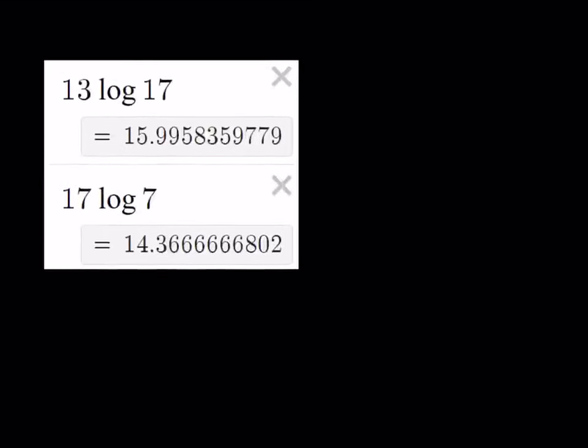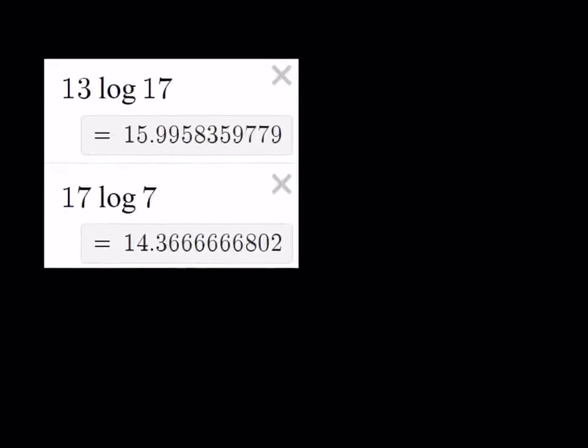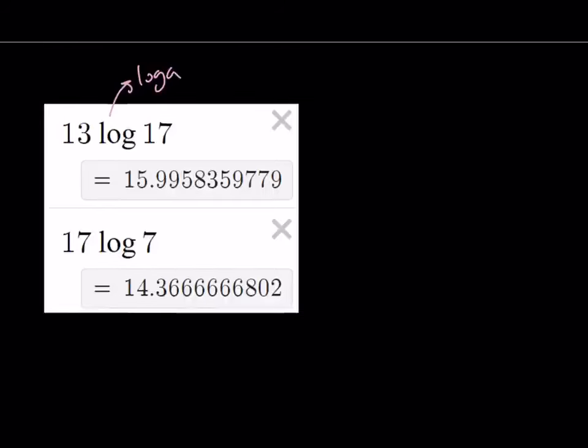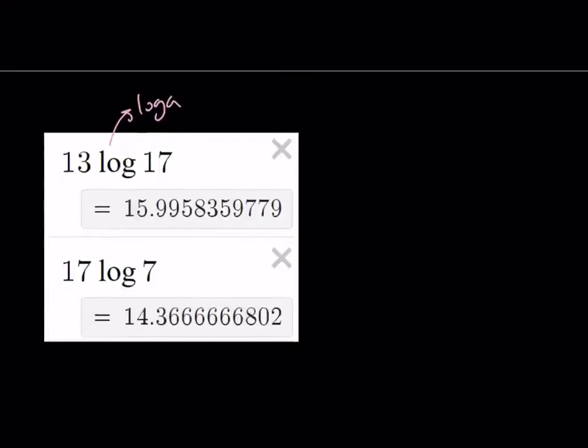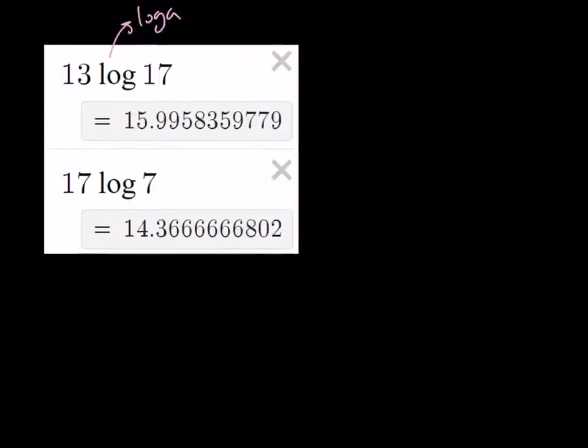We're looking at two numbers: 13 log 17 and 17 log 7. The first one is log a and the second number is log b. We see that log a is greater than log b. What does that mean? Does this mean a is greater than b?